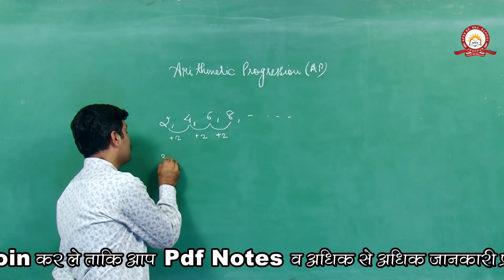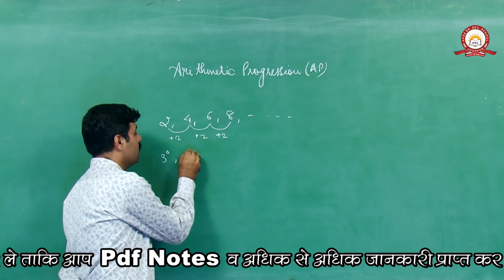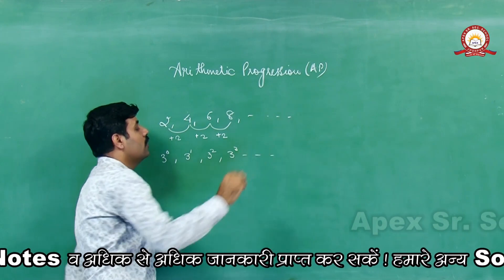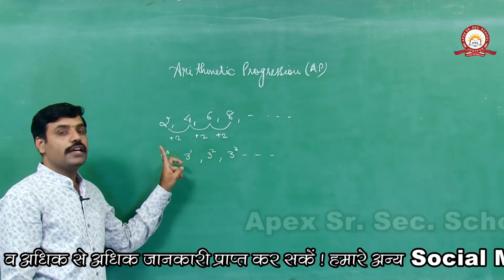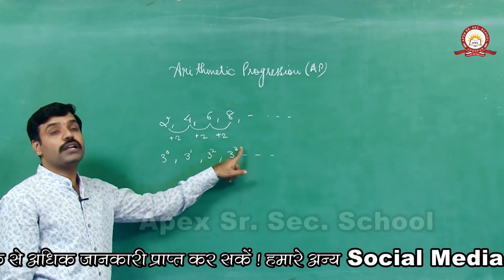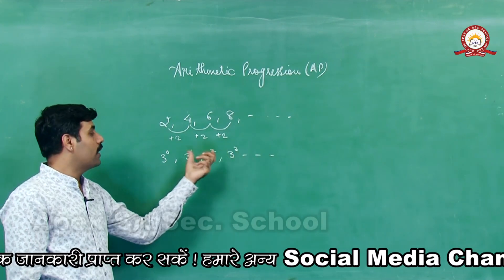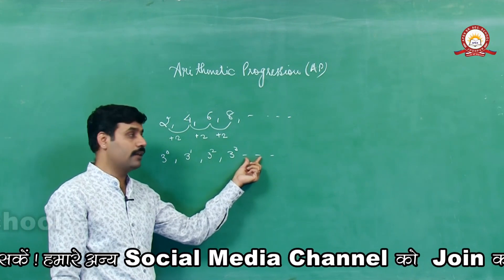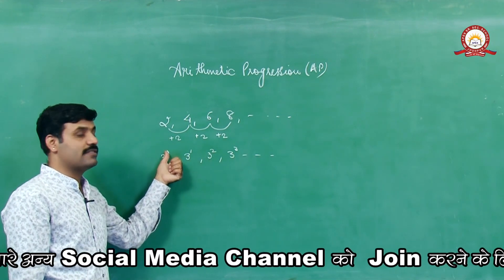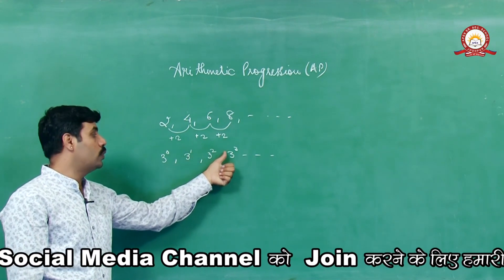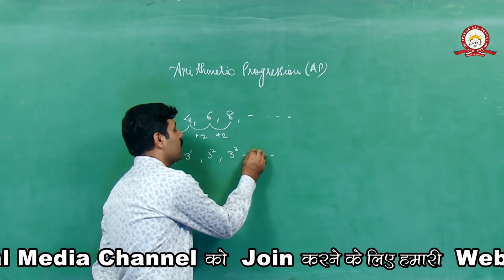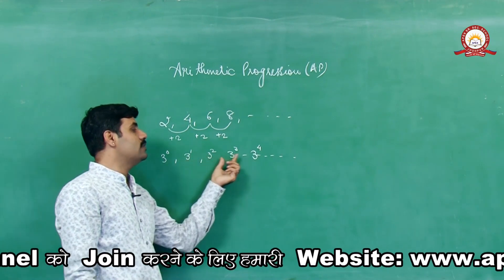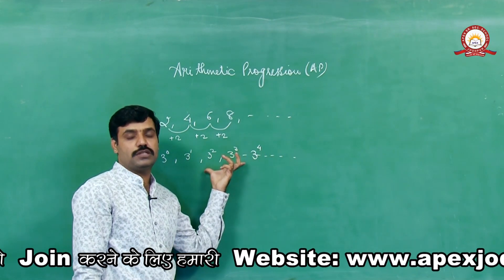Similarly, हम बात करते हैं जैसे 3 की power 0, 3 power 1, 3 power 2 and 3 power 3 so on। इस case में भी जो powers हैं वो एक particular pattern follow कर रहे हैं। आप बिना formula यूज़ किये भी जानते हैं कि इसके बाद 3 power 4 आएगा and so on। यह particular series एक sequence हो गई है।